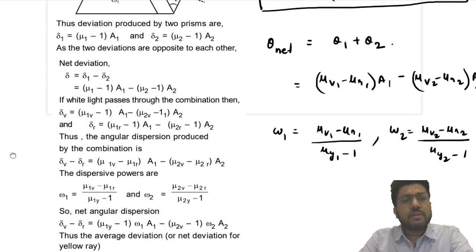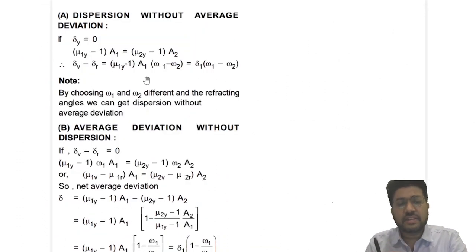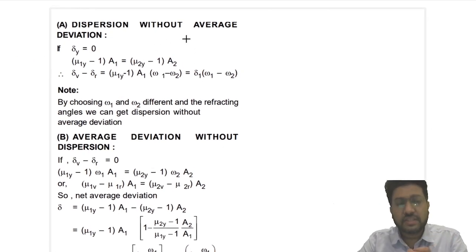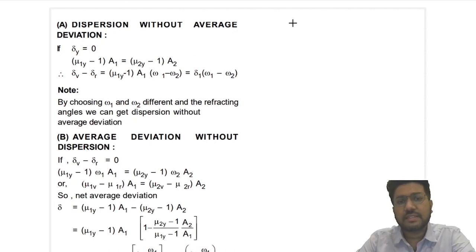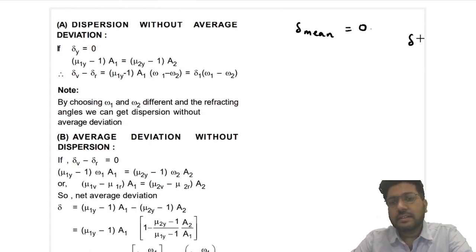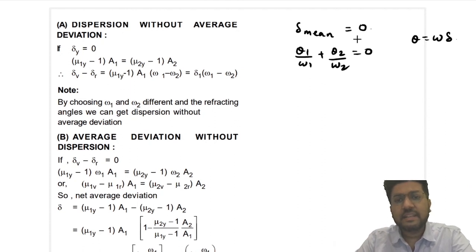Now let us look at what combinations are asked. First is dispersion without average deviation — there is dispersion but no deviation. If there is no deviation, the mean deviation is 0. You know that θ = ω·δ, so δ = θ/ω. Therefore θ₁/ω₁ + θ₂/ω₂ = 0. This is one way of representing δ_mean = 0.